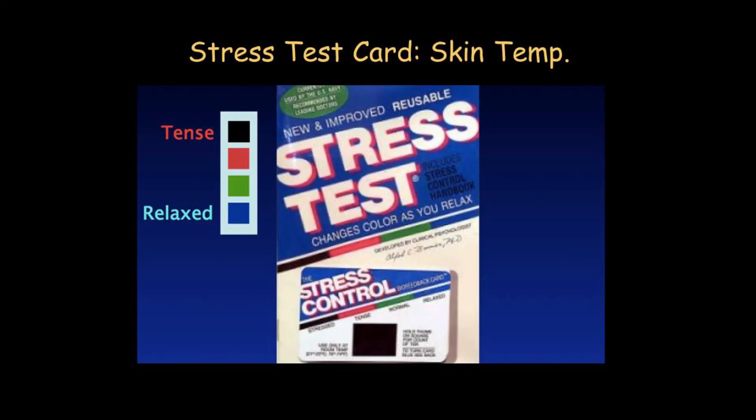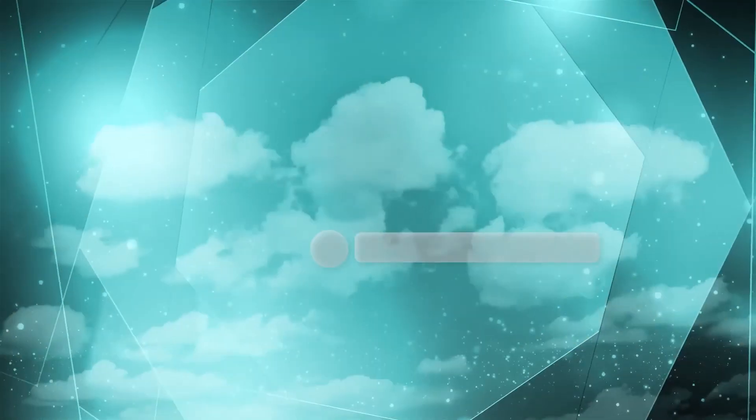Nowadays you can measure stress by measuring skin temperature — those stress test cards, for instance, are really measuring skin temperature. Adrenaline is very potent at constricting blood vessels in the skin, which is why people turn pale when they are about to faint. When blood vessels are constricted, less warm blood reaches the skin surface, so skin temperature begins to approach room temperature, which is usually much lower. That's the basis for the stress test card.